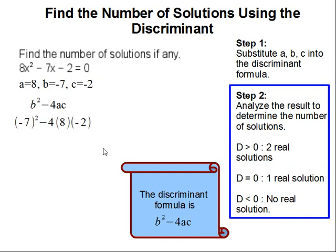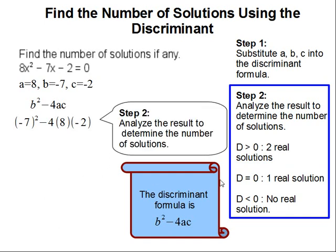Step 2: Analyze the result to determine the number of solutions. If D is greater than 0, which is the result of our discriminant formula, then you have two real solutions. If D equals 0, then you have one real solution. And if D is less than 0, you have no real solution.